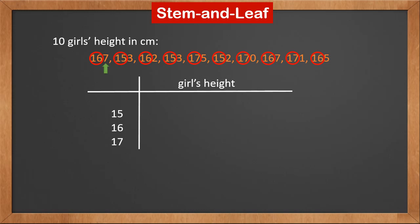The last digit of 167 is 7 — we put it to the right of 16. For 153, we put 3 to the right of 15. For 162, we put 2 to the right of 16. Since 2 is less than 7, it should be put to the left of 7. We treat each number this way.